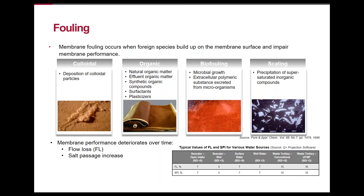Colloidal fouling happens when suspended solids are deposited on the membrane surfaces. Organic fouling can be due to a number of contaminants, both man-made and natural, and can act in combination with biofoulants. Microbial growth combined with extracellular excretions and organic foulants can cause persistent biofilm production. Scaling occurs when mineral salts in saturation are deposited on the membrane surface. At the bottom of this slide we can see typical values of flow loss and salt passage increase for various water sources from our Q-plus projection software — percentages applied year over year to forecast membrane performance as the membrane ages.